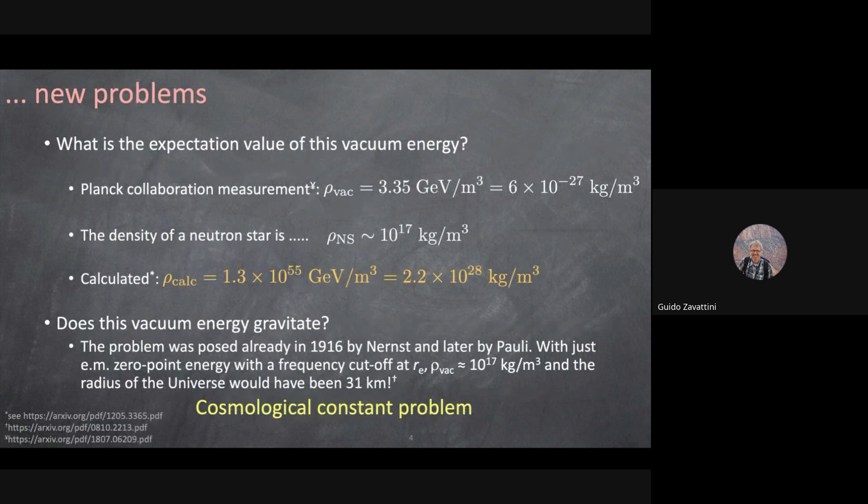As you get new discoveries you may have new problems, and here we have a gigantic one. The Planck collaboration — a satellite measuring the anisotropy of the cosmic microwave background — was able by studying the expansion of the universe to determine the average energy density of vacuum, which can be converted into a mass per unit volume.